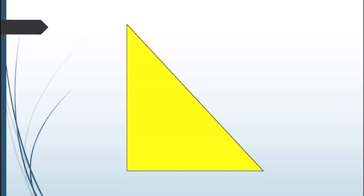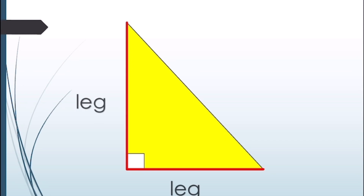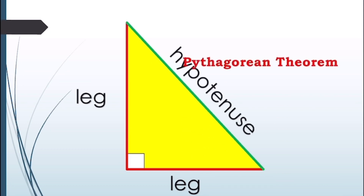In Mathematics 7, we were introduced to right triangles together with other kinds of triangles. We defined that a right triangle is a triangle with a right angle. We also knew that the sides which include the right angle are the legs of the right triangle, and the third side, which is the longest side, is the hypotenuse. However, the study of right triangles will not be complete without mentioning the theorem considered as one of the most useful theorems in geometry — the Pythagorean theorem.